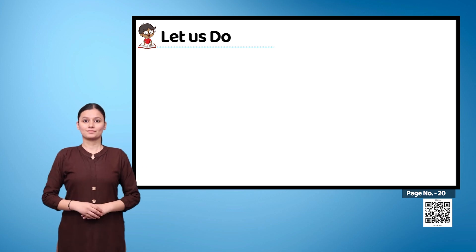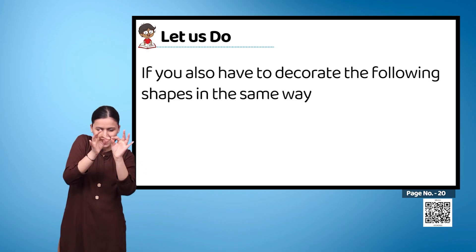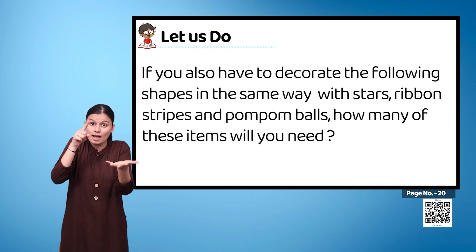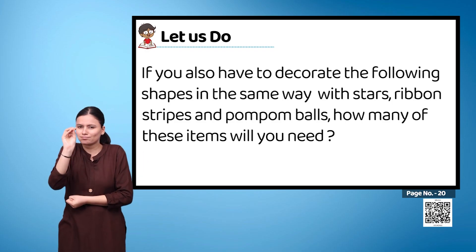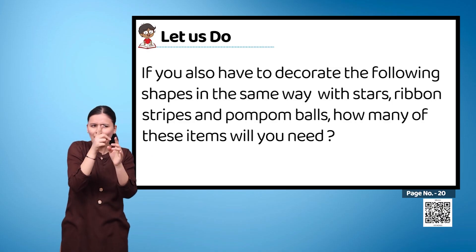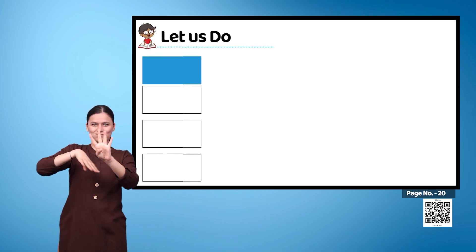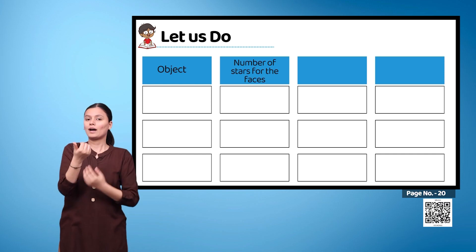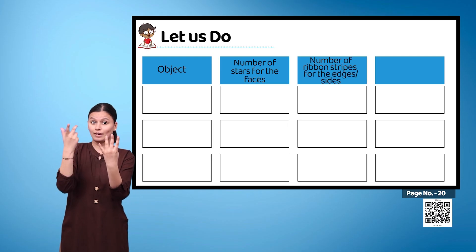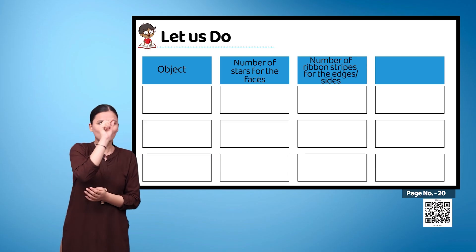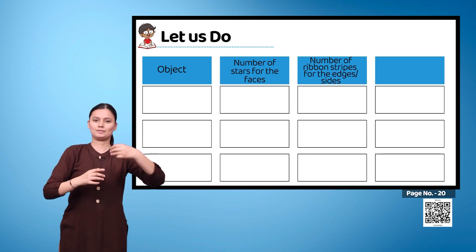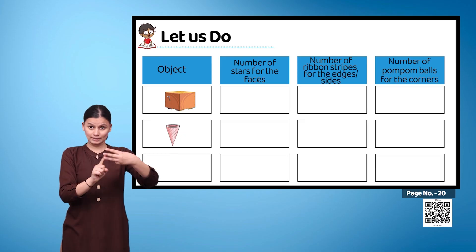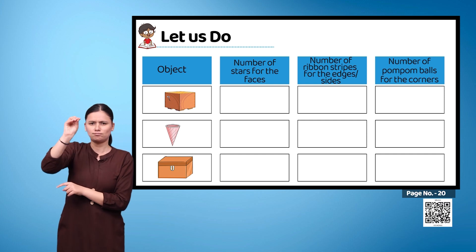Let us do: If you also have to decorate the given shapes in the same way — with stars, ribbon stripes, and pom-pom balls — how many of these items will you need? We have a table with four columns: object, number of stars for the faces, number of ribbon stripes for the edges or sides, and number of pom-pom balls for the corners. The objects are a cajon, an ice cream cone, and a wooden box. The remaining columns have to be filled by you.